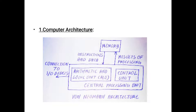In this diagrammatic representation, the first component is memory. Memory means what data and what programs are kept in memory. The next component is the central processing unit (CPU). In the CPU, the first part is the arithmetic and logical unit (ALU). Arithmetic operations like addition, multiplication, subtraction, and division — all mathematical operations — are done in the ALU.